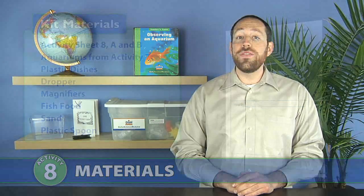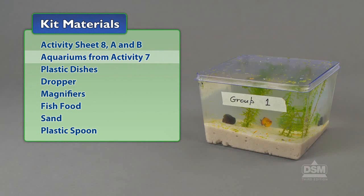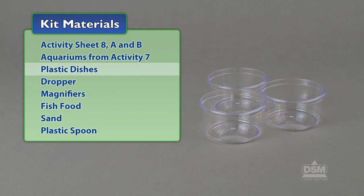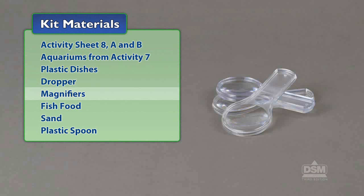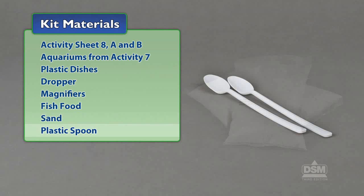You will need the following materials from the kit: Activity sheet 8, parts A and B, aquariums from activity 7, plastic dishes, dropper, magnifiers, fish food, sand, and a plastic spoon.